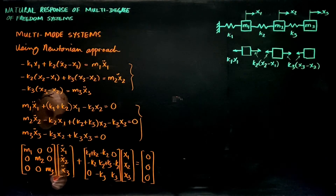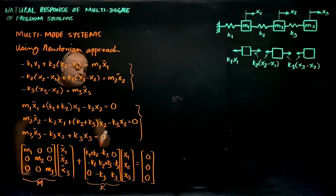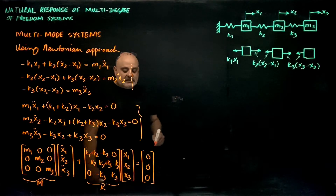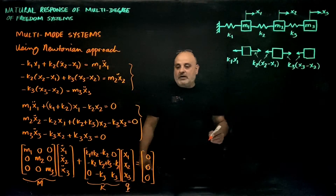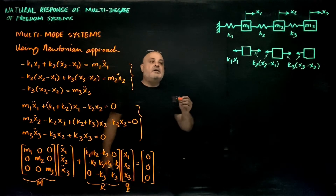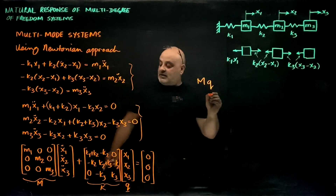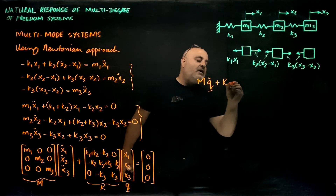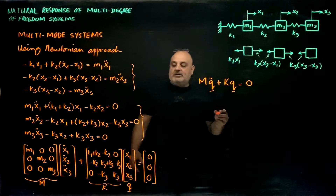This is the system in matrix form. This is known as the inertia matrix M and this is the stiffness matrix K. The vector [x1, x2, x3]ᵀ I refer to as the q-vector, which is the vector of degrees of freedom or generalized coordinates of the system. So I can write this equation as M·q̈ + K·q = 0.